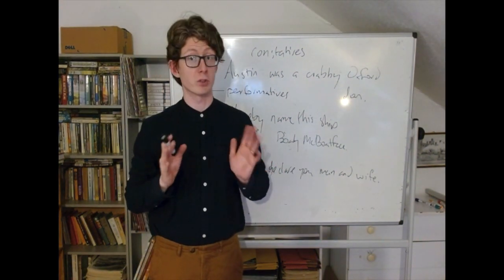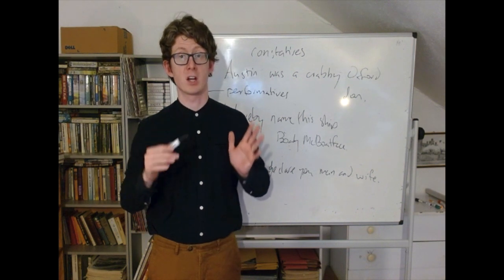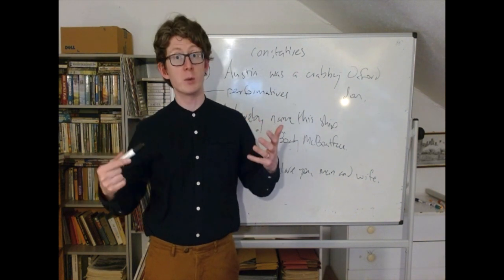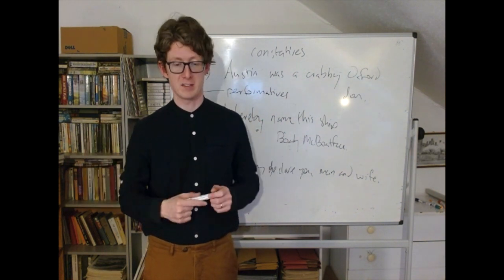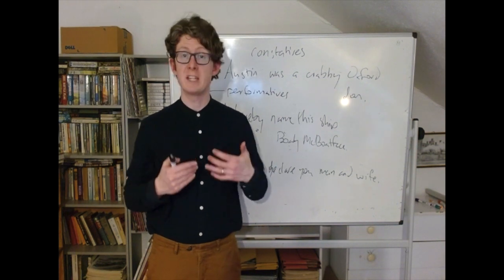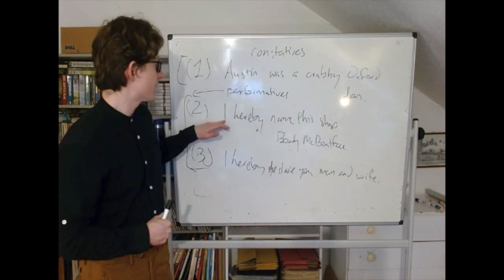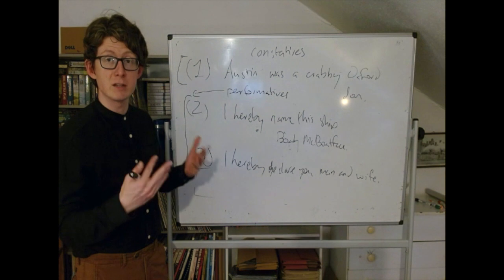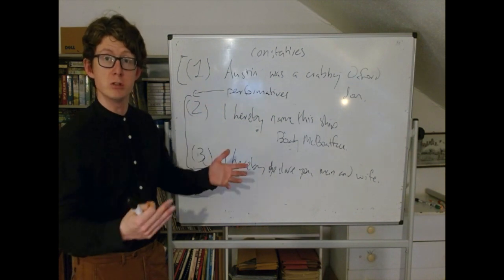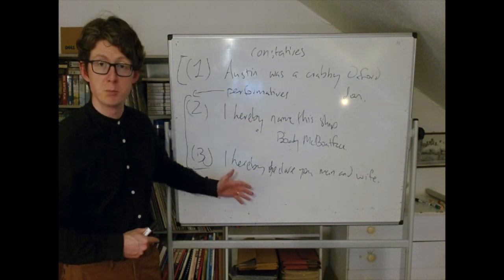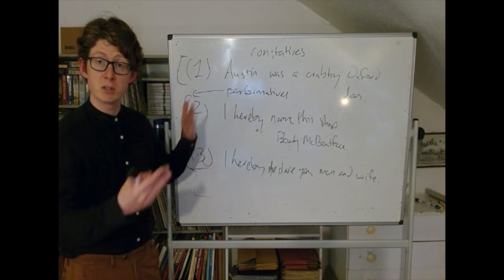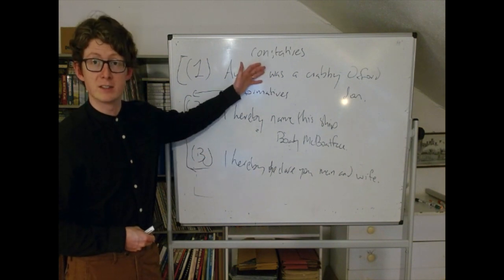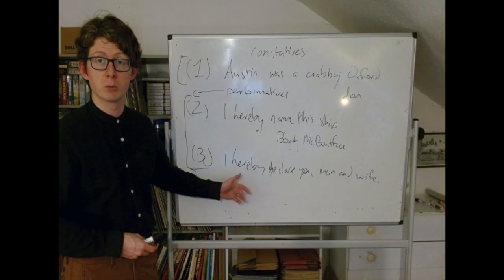Our rough characterization of a performative is that it's a kind of speech act where saying it makes it the case. With performatives, the main aim is not to state a fact. When I say 'I hereby name the ship' or 'I hereby declare you man and wife,' Austin thinks we're not trying to state facts about the world — we're trying to do things. We're trying to name a ship or marry people. There's a contrast between making an assertion and doing something with a sentence.